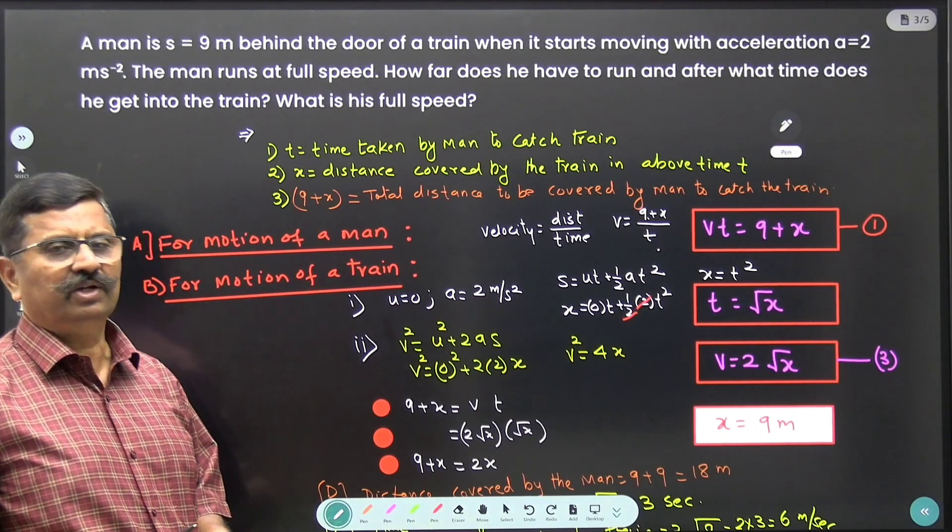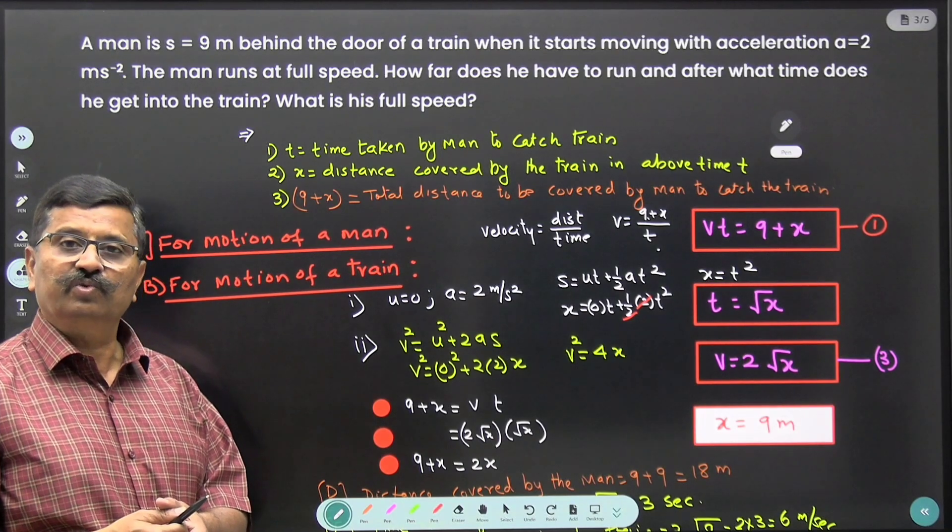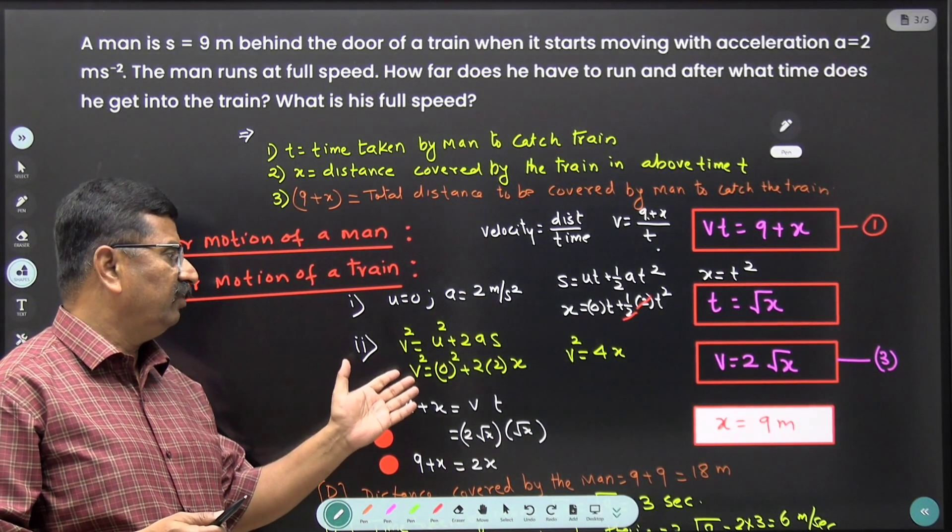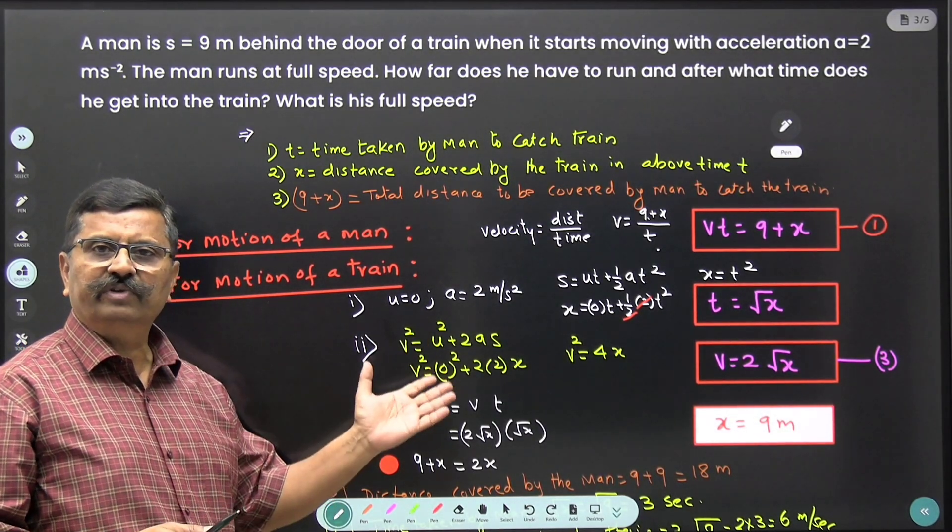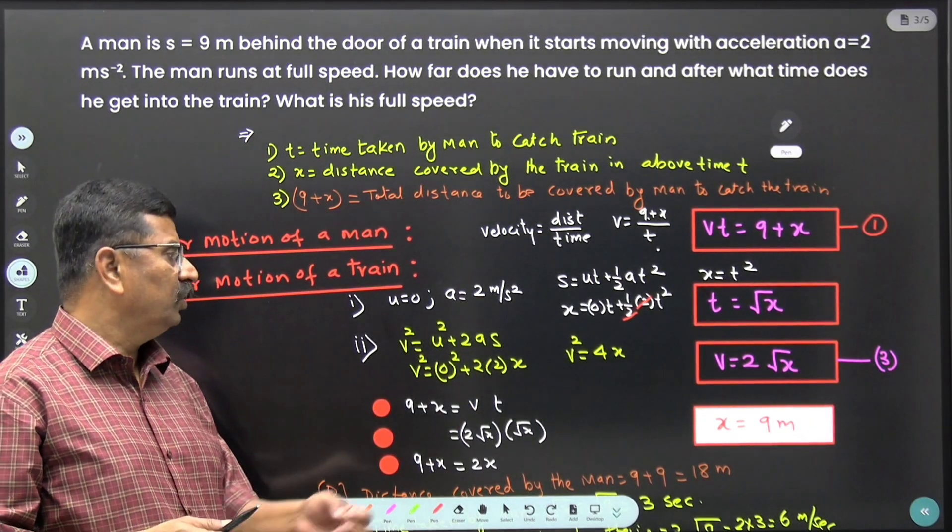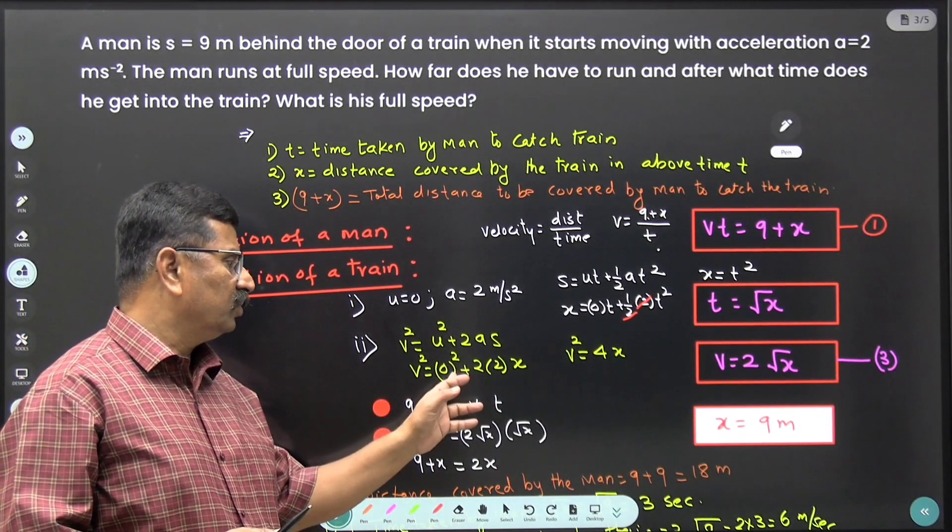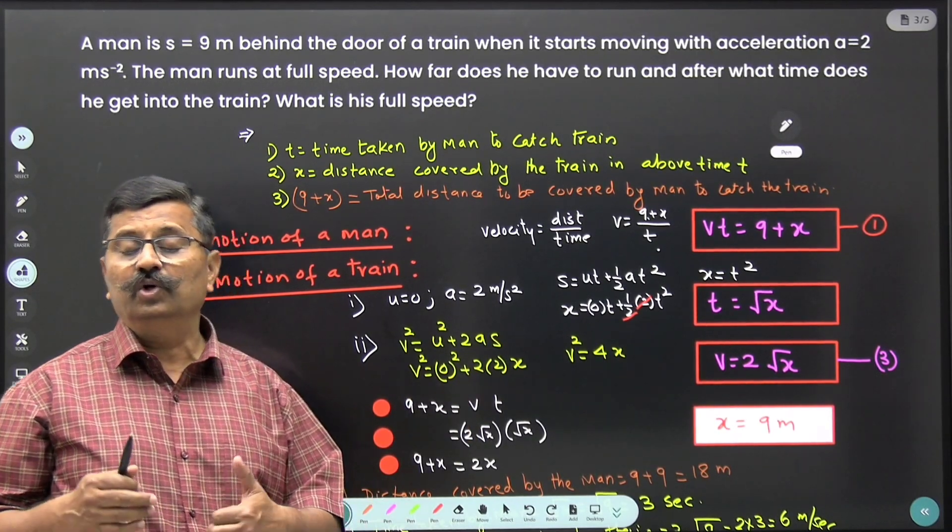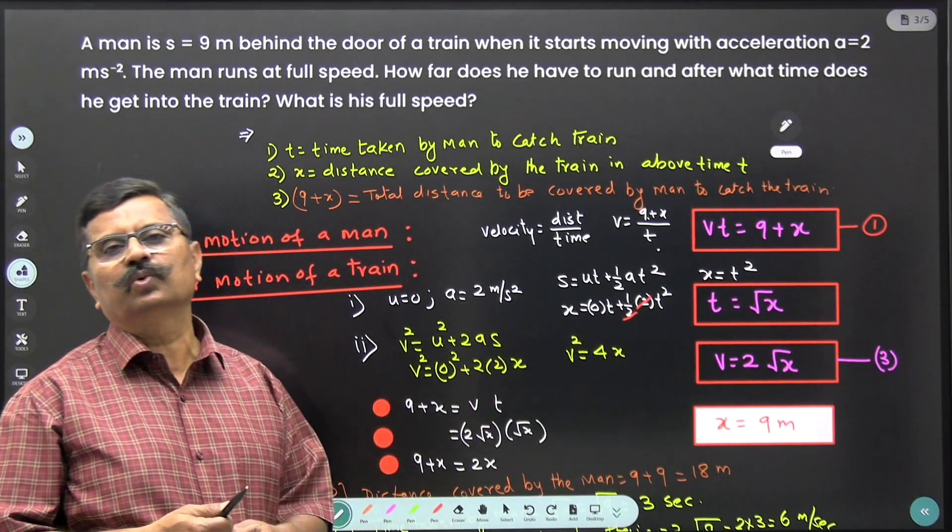We will use one more kinematic equation that is v square equal to u square plus 2 as. Now v is the final velocity. After time t, u is the initial velocity which is 0 plus 2 into value of a is 2 and distance s is x. So therefore, v square is equal to 0 square plus 2 into 2 x. Therefore, v square is equal to 4 x. And therefore, v is equal to 2 root x.